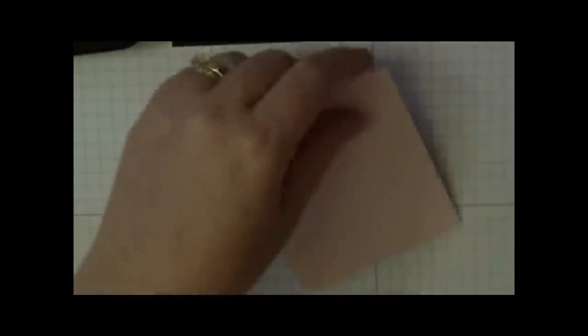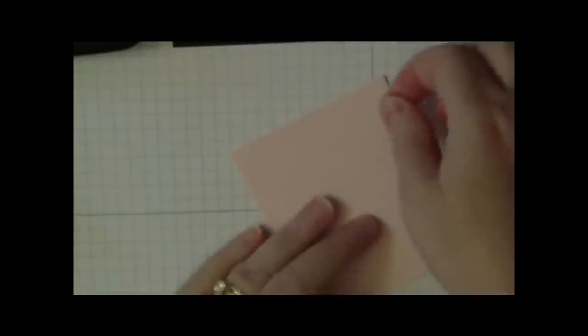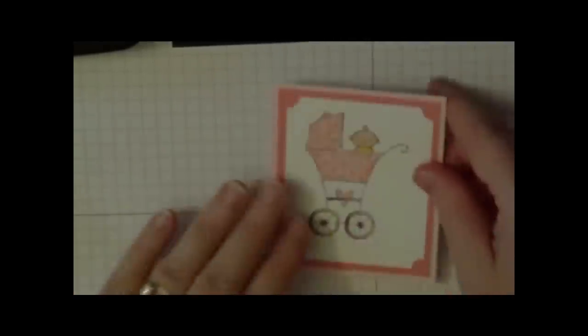And now we're going to add dimensionals to the back. And that way it will be ready for our next step. Now I always use five dimensionals. One in each corner and one in the middle. Just like that.